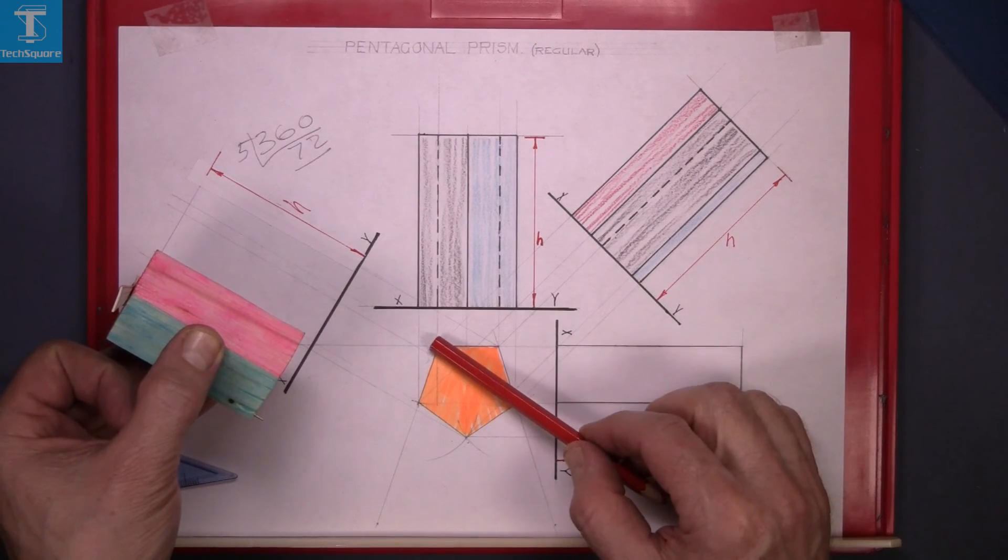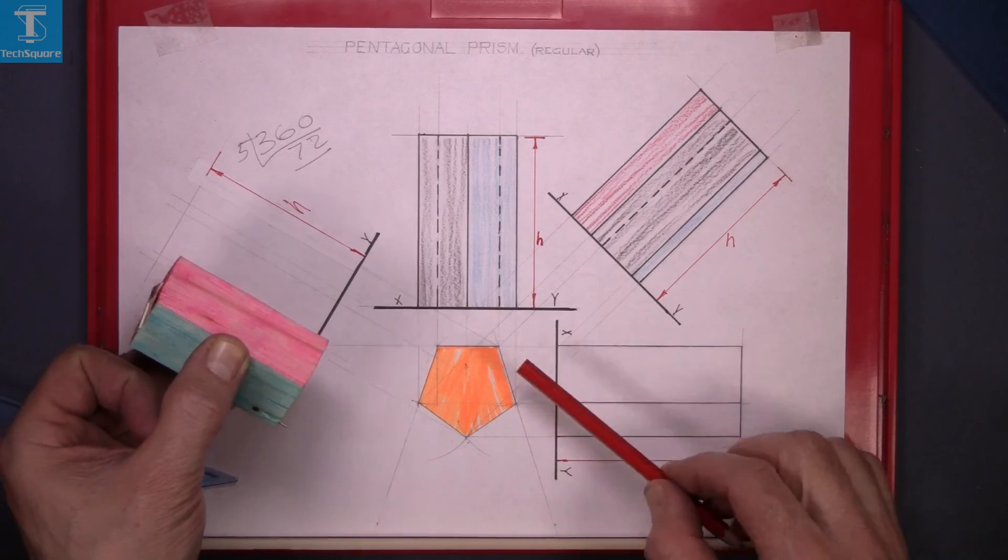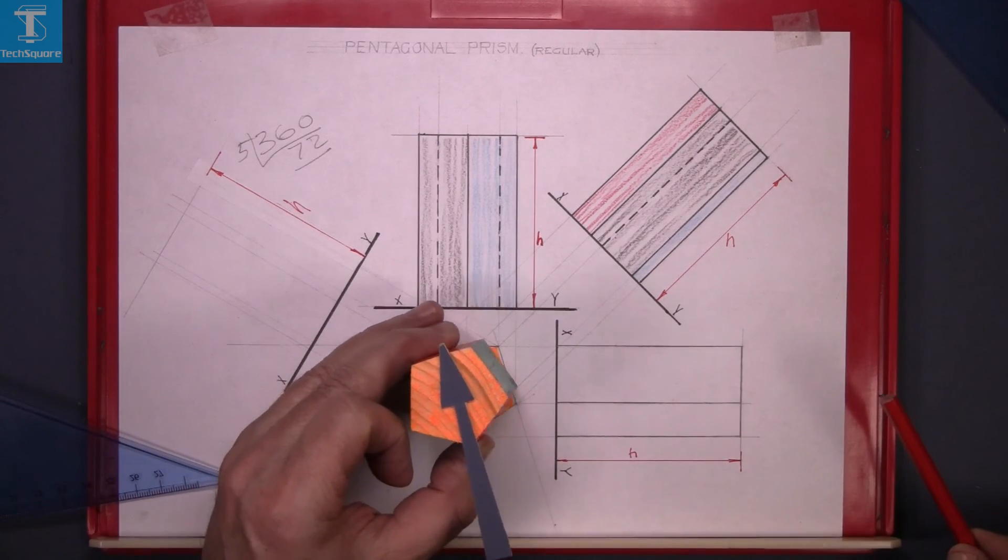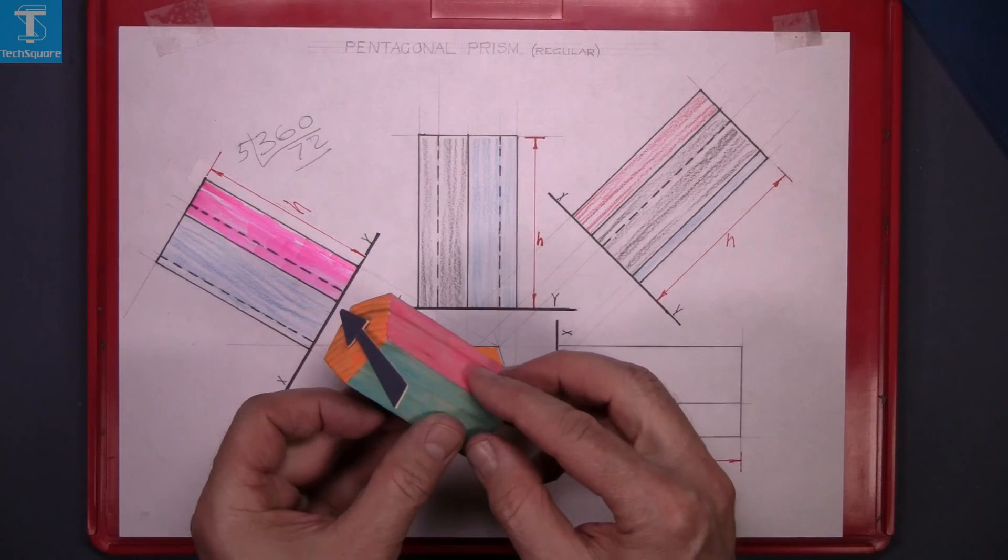The pink surface and the blue green surface here. We won't see these three surfaces at the back. We'll see this one here and this one here. And that's the view complete.